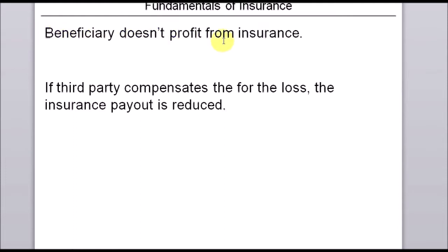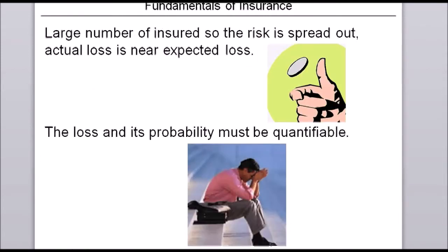The next fundamental is that the beneficiary must not profit from the insurance, as this creates an incentive to initiate a damage and make a claim for a payout. Related to this: if a third party compensates some of the loss, the insurance company only has to compensate the remaining part rather than the full value of the policy — otherwise there would again be profits to be made from insurance and an incentive to artificially initiate damages.